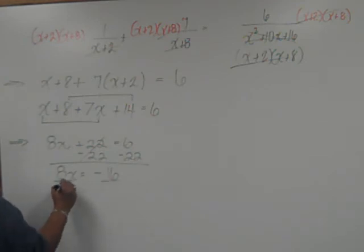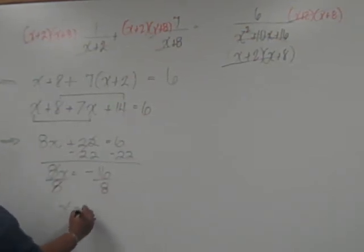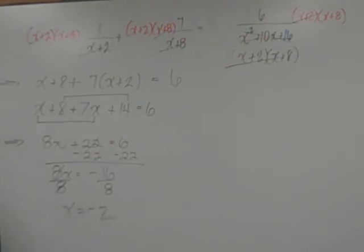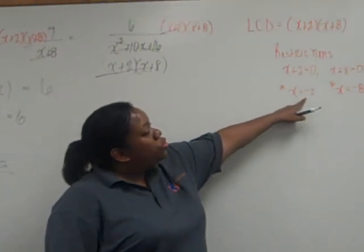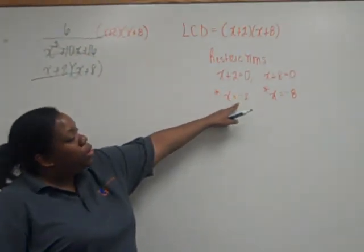Dividing both sides by 8, we find that x equals negative 2. But before you type that in the box, notice here that negative 2 is restricted from being a solution.